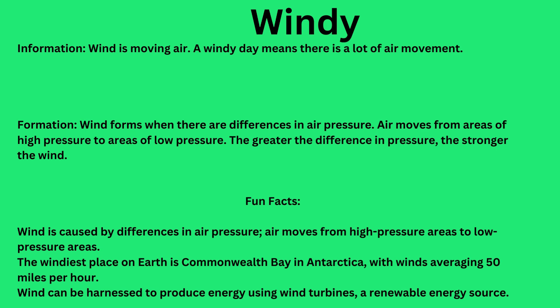Fun facts about wind: Wind is caused by differences in air pressure, with air moving from high pressure areas to low pressure areas. The windiest place on Earth is Commonwealth Bay in Antarctica, with winds averaging 50 miles per hour. Wind can be harnessed to produce energy using wind turbines, a renewable energy source.